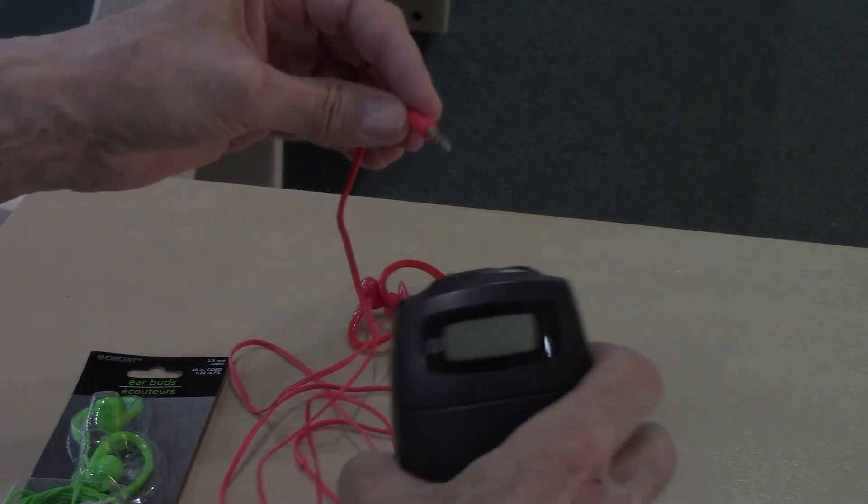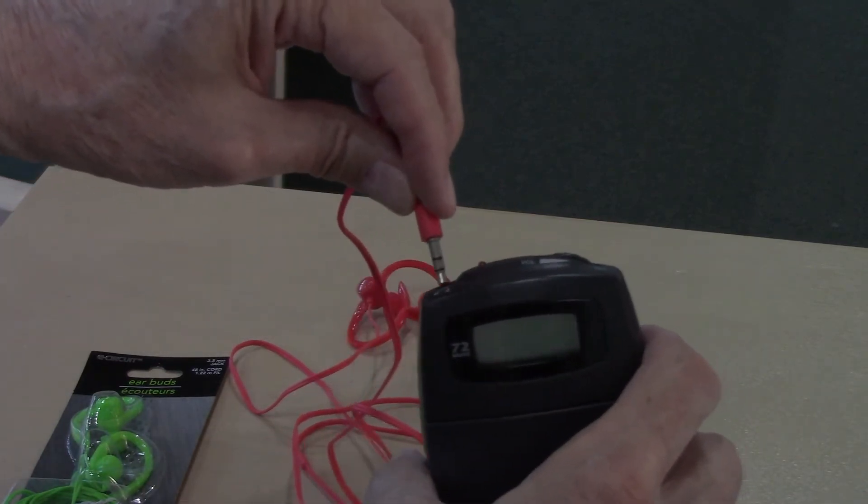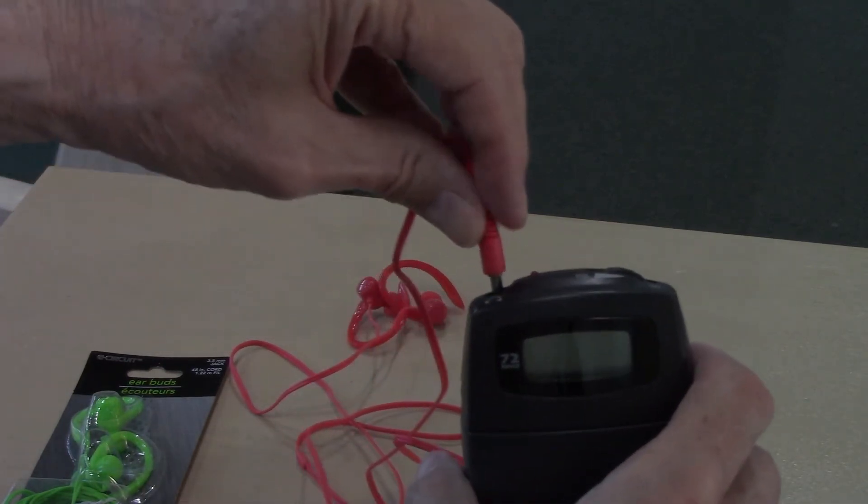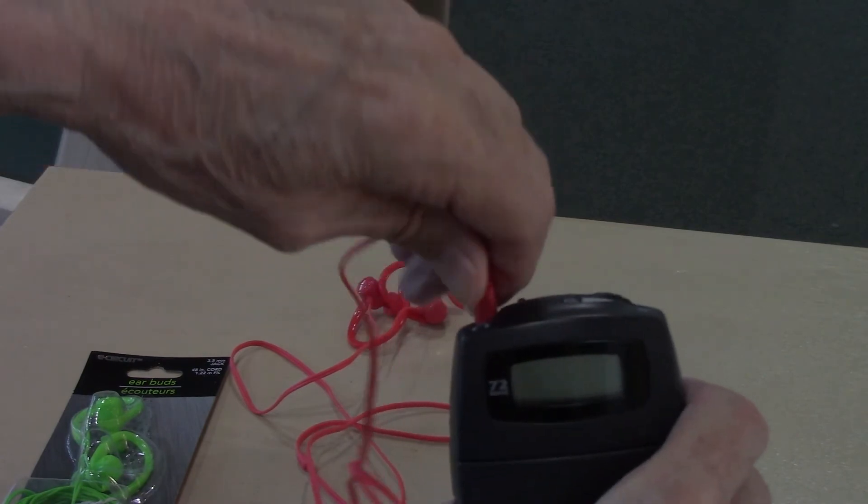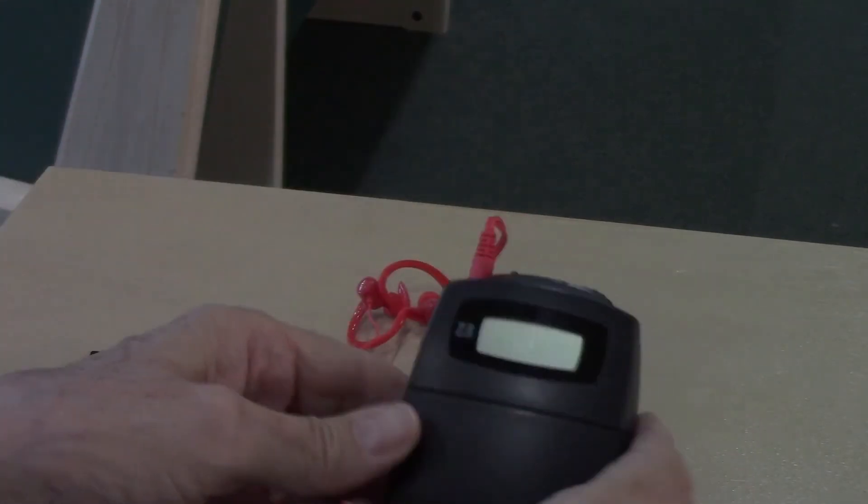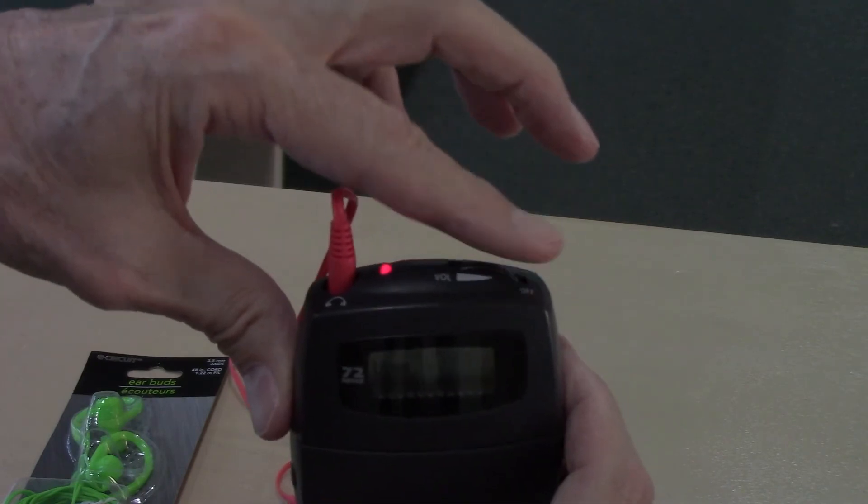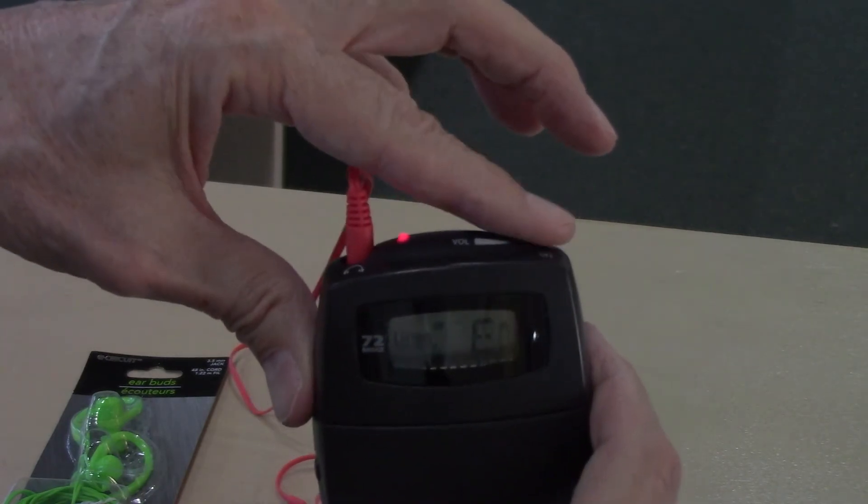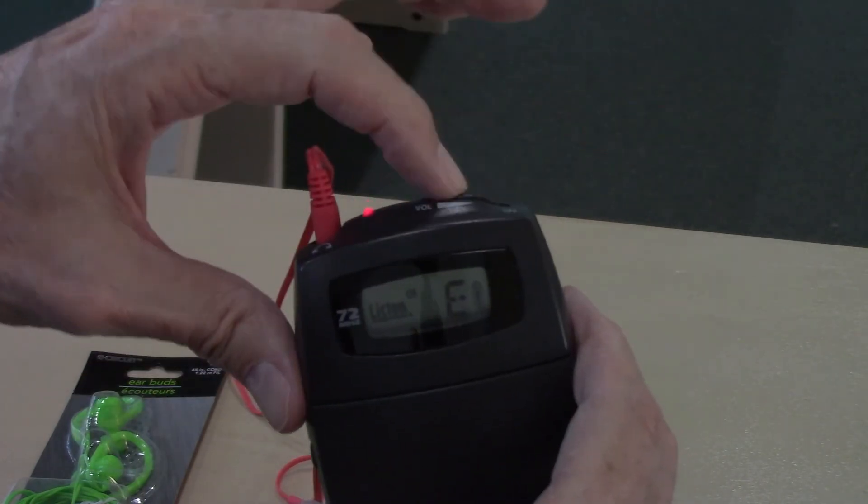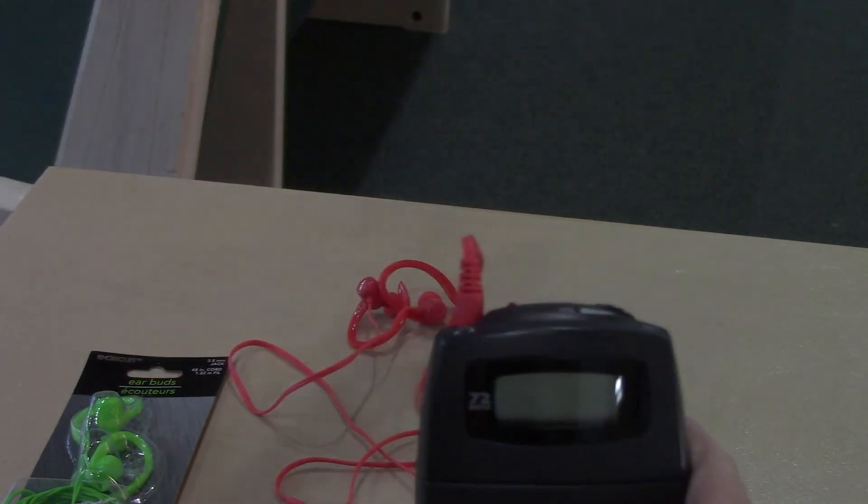You'll notice it just plugs into the unit. Then you turn it on by scrolling the wheel. That's also a volume control. It's always good to make sure to turn it all the way off when you're done. The red light will disappear when it's off.